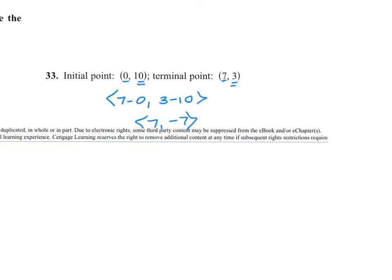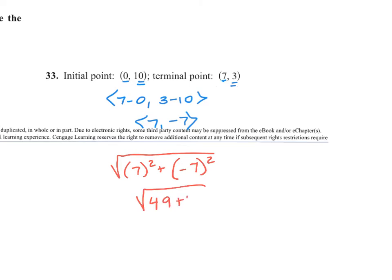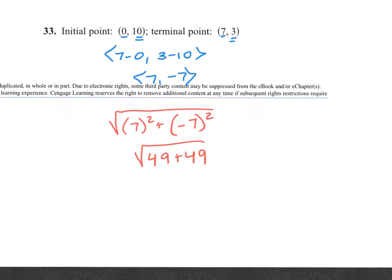Then the magnitude is the square root of A squared plus B squared, so the square root of 7 squared plus negative 7 squared. That's 49 plus 49, which is 98, and that simplifies to 7 root 2. Sometimes it'll say to round, sometimes to keep exact. For magnitude, you're definitely keeping exact.